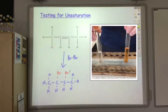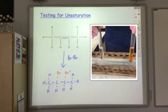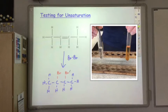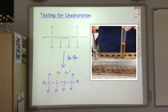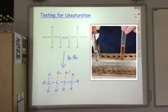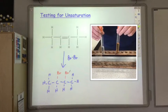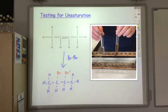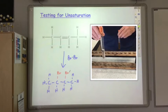We can see that this one here on my right has decolourised the bromine water, so that was the unsaturated alkene, whereas the one on the left has not decolourised the bromine water. That's the way to test whether or not a sample is unsaturated. If it's unsaturated with a carbon-carbon double bond, it will decolourise the bromine water.